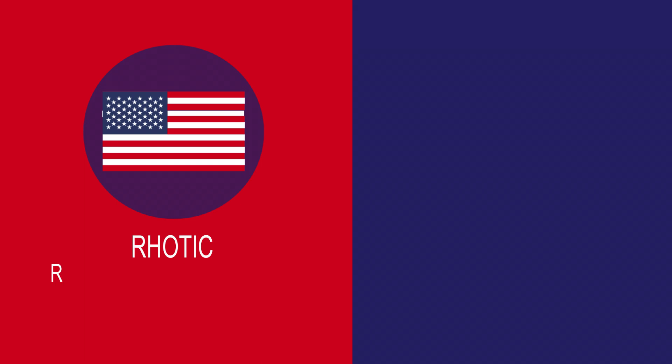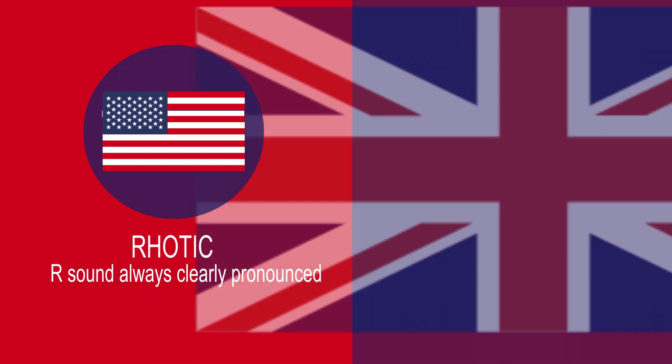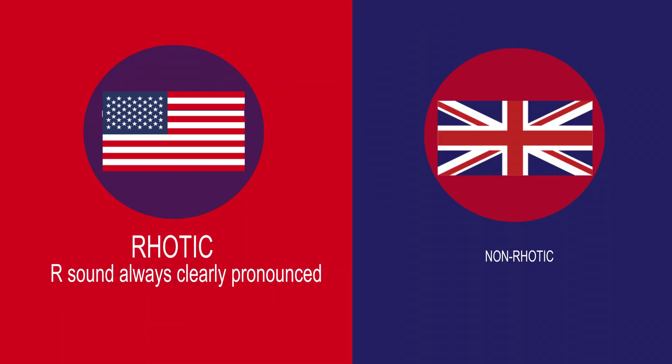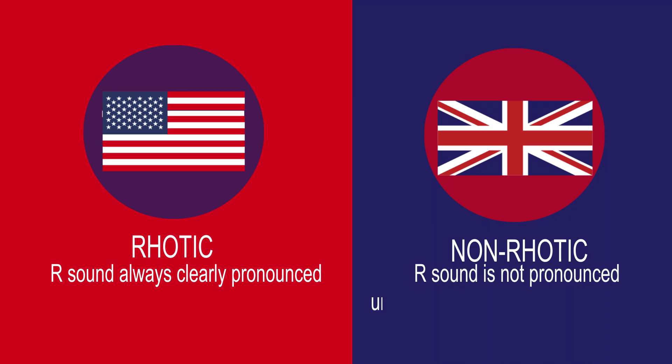Accent. American English is rhotic — the 'R' sound is always clearly pronounced. British English is non-rhotic — the 'R' sound is not pronounced unless it is followed by a vowel sound. For example: 'butter' (American) vs 'butter' (British).